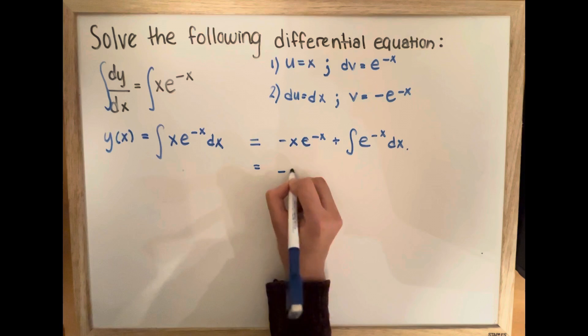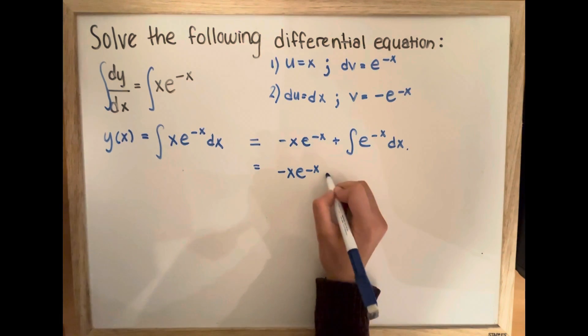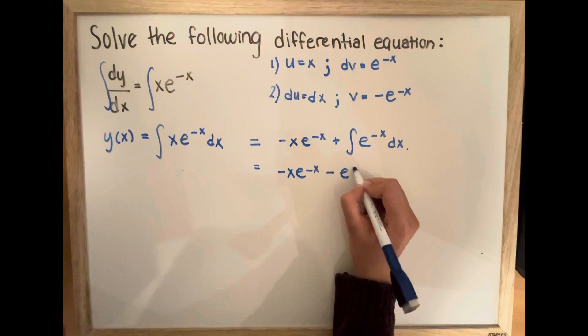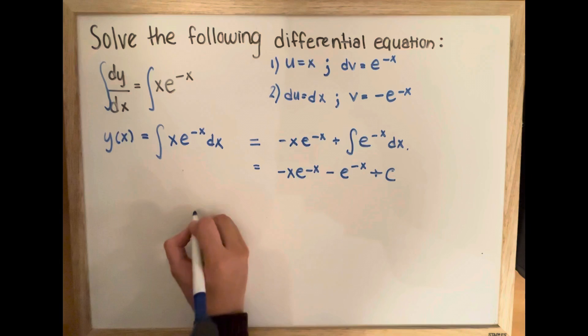So we're going to simplify this. The integral of this is going to be negative e to the negative x plus c.